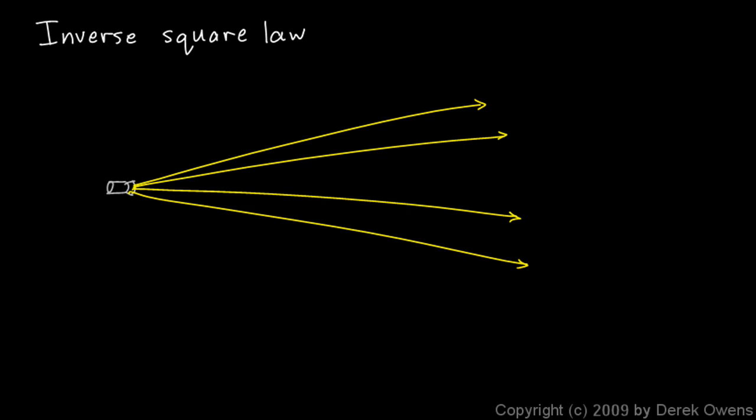Let's imagine we place a screen here, so the light lands on this screen and illuminates it. Suppose this screen is a distance of one meter away from the light source. You can see all this light landing on the screen will illuminate it with a certain brightness, a certain amount of illumination, a certain amount of light landing on that screen.